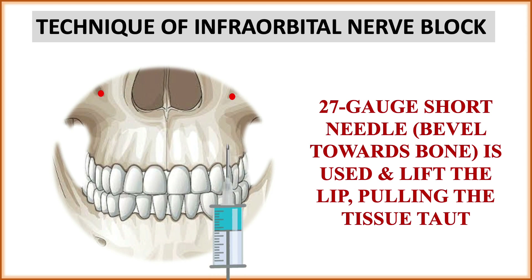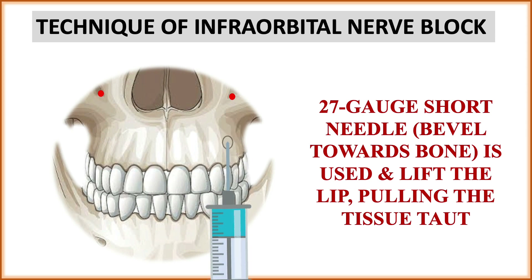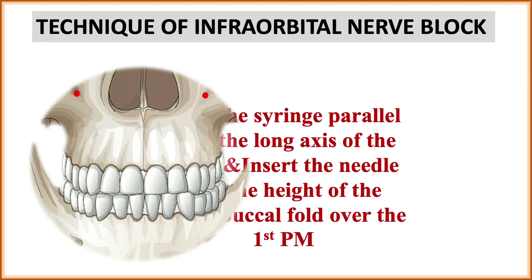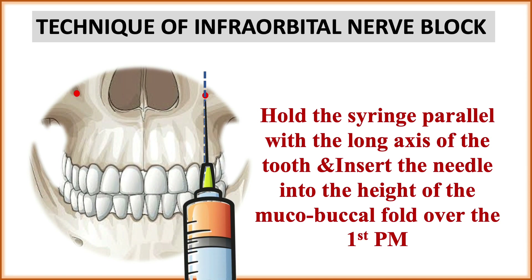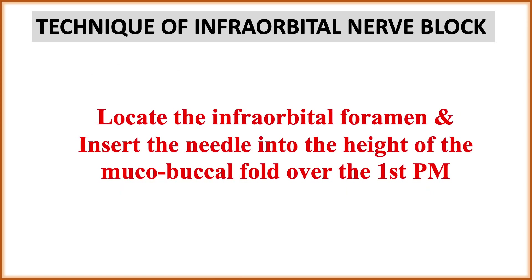In the first figure, the bevel is away from the bone — this is the wrong way of insertion. In the next figure, the bevel is towards the bone — this is the correct way. In the next step, hold the syringe parallel with the long axis of the first premolar and insert the needle into the height of the mucobuccal fold over the first premolar. Just over the first premolar at the height of the mucobuccal fold, you will find the infraorbital foramen.